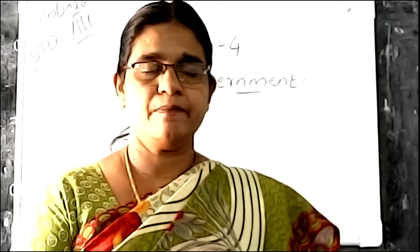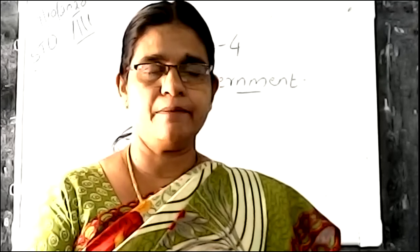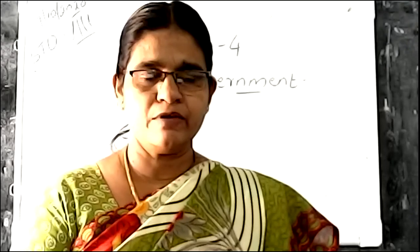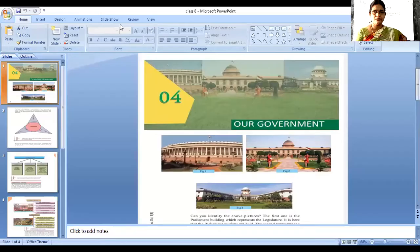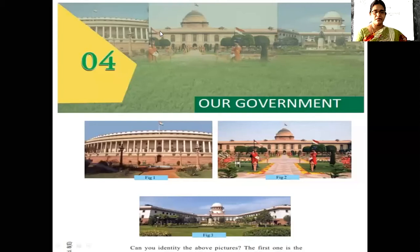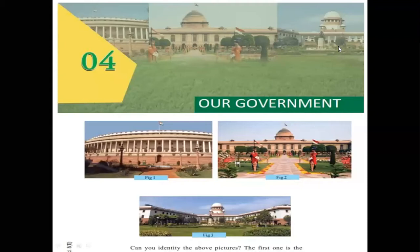On the first page of this lesson, there are three pictures. Haven't you seen these pictures? All of you look at the textbook. We can see these types of buildings in TV and newspapers. What is in the first picture? Anyone give the answer. That is the picture of the Parliament.